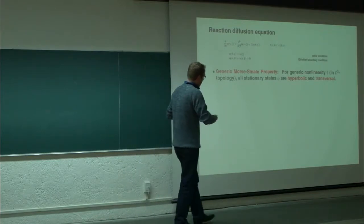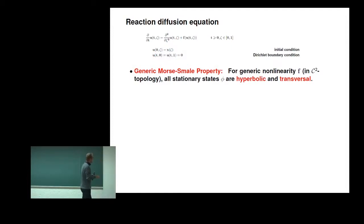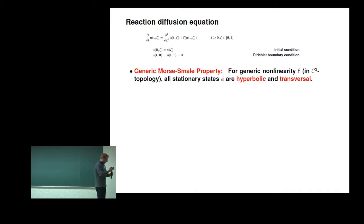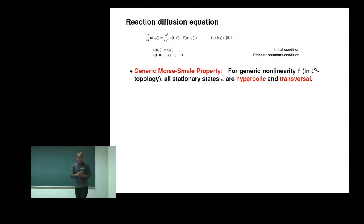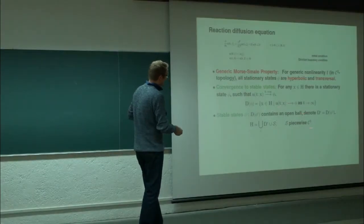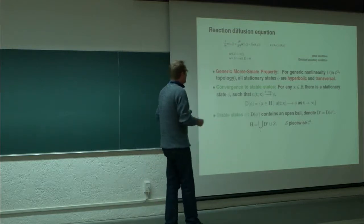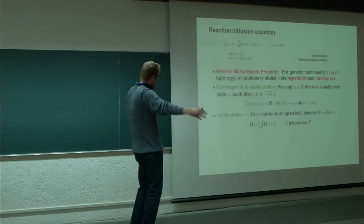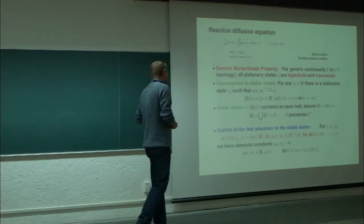The good thing is that for generic nonlinearities of this type, it is known in the deterministic dynamical system literature that the stable states are generally finite in number and hyperbolic. This means you have a clear separation of attracting and repelling spaces, and the stable and unstable eigenvalues are transversal — you don't have anything like homoclinics. The domains of attraction are finitely many, open sets, and the separatrix is also regular and piecewise C¹.